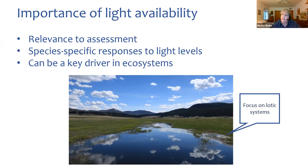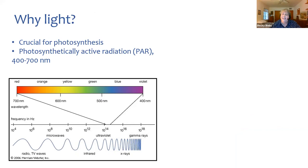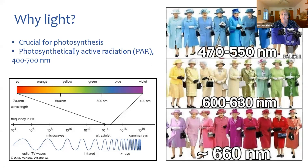Today I'm going to focus on lotic systems — streams and rivers — both headwater systems and also fifth, sixth, and seventh order rivers. There are lots of examples of light issues in lake research, but I'm not really going to focus on that today. As a reminder, light is critical for photosynthesis. The range we think about is the photosynthetically active radiation range, also termed PAR — the visible range between red and violet. If you forget, you can always look at what the queen is wearing; she's always wearing clothes in the full PAR range.